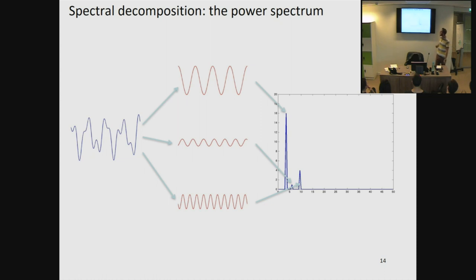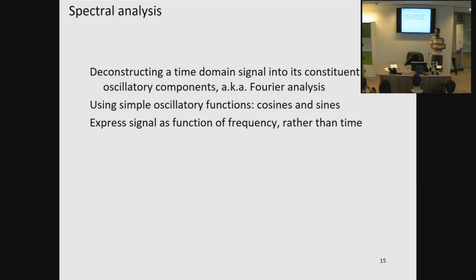For example, the top basis function looks like a 4 hertz oscillation with a power value of 16. What is important to remember in these power spectra is that we lost the phase information — you cannot read from a power spectrum at which phase each oscillation is. To recap: in spectral analysis, we deconstruct our time domain signal into oscillatory components using cosines and sines, expressing our signal in terms of frequency instead of time. Mathematically, these contain the same information, so we can always go back from frequency to time and vice versa.